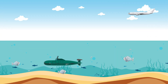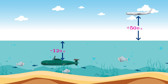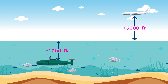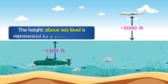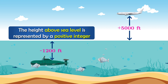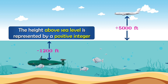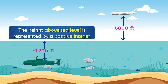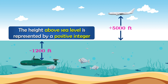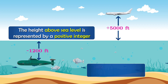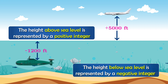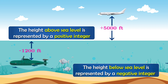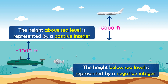Another example is the measurement of height above and below sea level. An aeroplane flying at 5000 feet above sea level is represented by a positive digit, but for a submarine sailing under the sea, the measurement of height below sea level is represented by a negative digit.